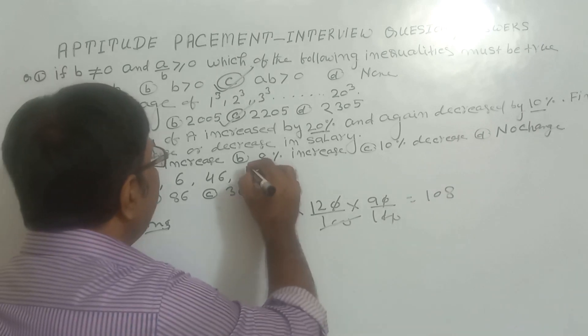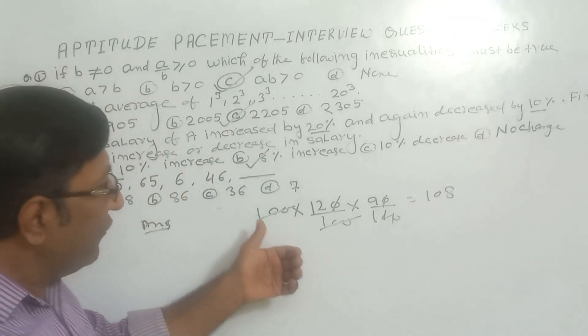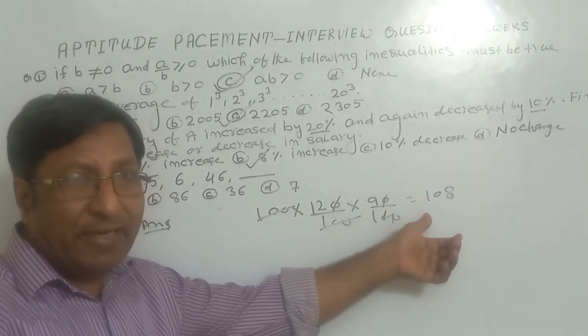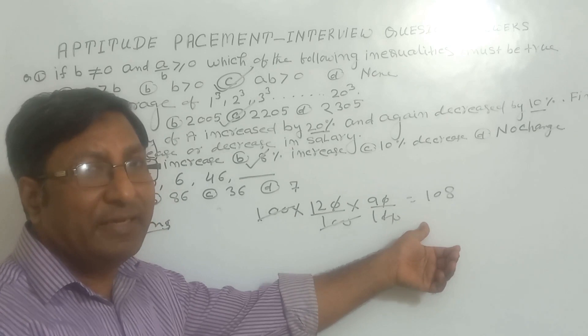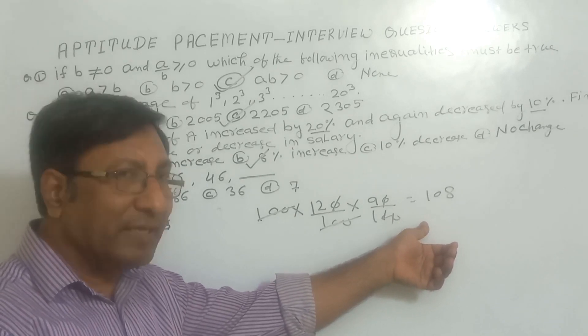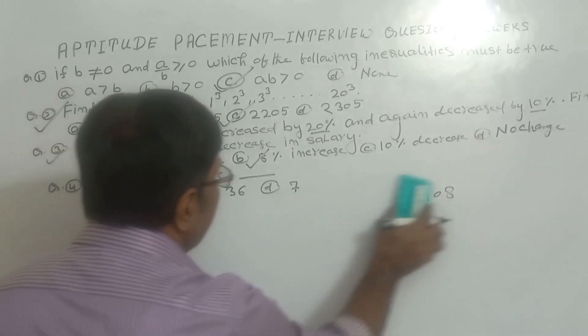So our right answer is 8% increase. So this is option B. 8% increase is the correct answer. If our result is less than 100, there is a loss. If our result is greater than 100, then there is a profit, that is the increase. So here 8% increase.